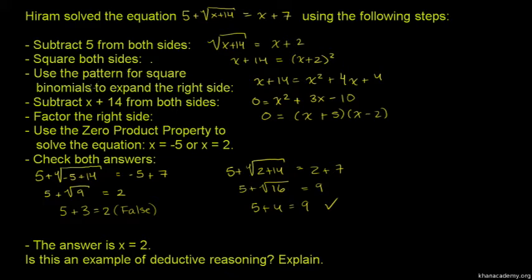Next, we use the pattern for square binomials to expand the right side. (x + 2)(x + 2) equals x² + 4x + 4.